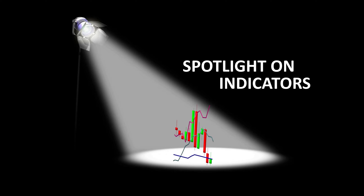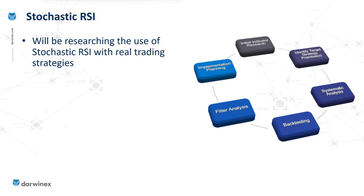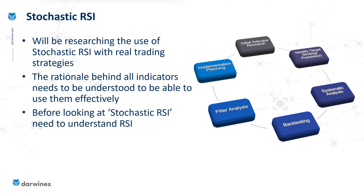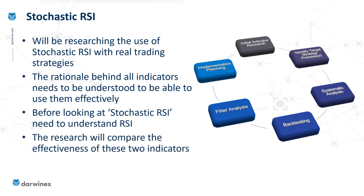This episode is part of a wider series known as Spotlight on Indicators. If you want to look at any of the other episodes, you can find a link in the description. The purpose of starting off with the relative strength index is because we're actually looking at a piece of analysis that will compare the standard RSI with another indicator called the Stochastic RSI. The image on the right here explains the methodology that I will be taking, and the very first stage is to thoroughly understand each of those indicators by performing some initial research. I believe you thoroughly have to understand the messages that indicators give out in order to use them effectively, and so this episode is going to focus on that standard version of RSI. But ultimately, in future episodes, we will hopefully have a direct comparison between the effectiveness of these two indicators.